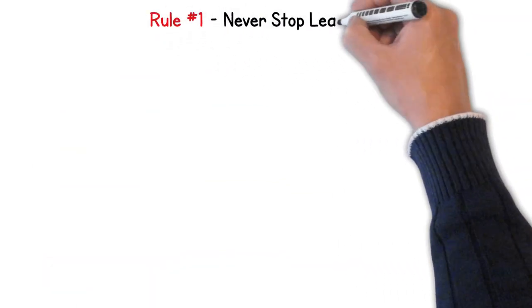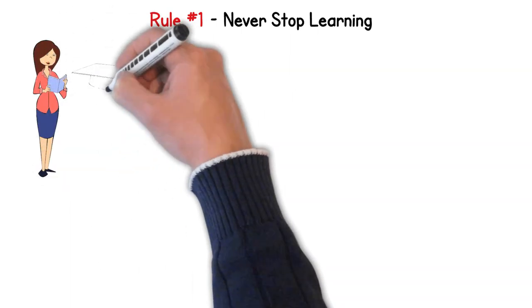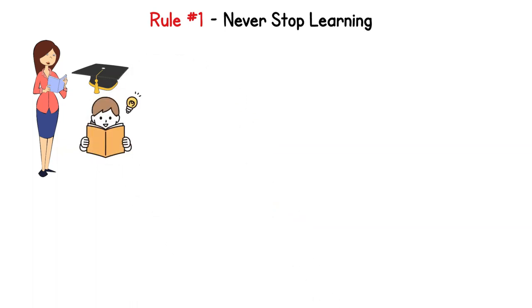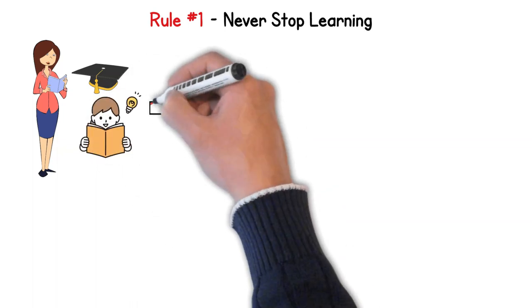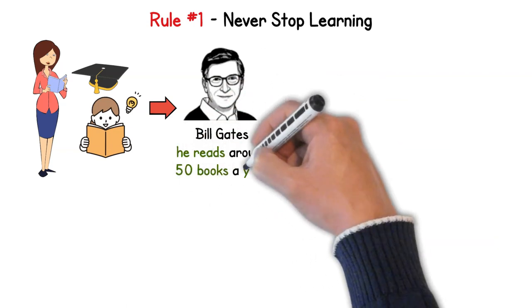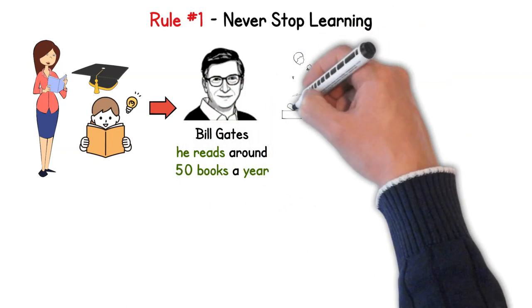Rule number one: Never stop learning. You know, I often hear people say that school or university was the last time they really studied anything. And that is a missed opportunity. Let's take the example of Bill Gates. Famously, he reads around 50 books a year. That's almost one book per week.